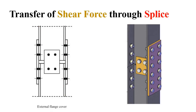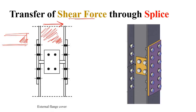Finally, the shear force transfer. In an I-section, shear force is mainly carried by the web. The web takes all the shear force and transfers it to a bolt, which transfers it to a fish plate, which then transfers it via bolts to the lower part of the column. The bolts here must be designed for this lateral or shear force.